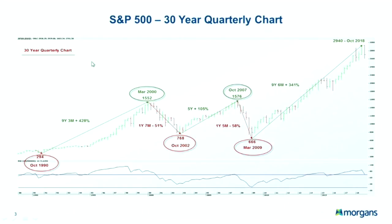Let's add some indicators to see why the red lights are flashing and why investors are nervous. Here I'm showing a 30-year quarterly chart on the S&P 500. What we can observe is that for the past three decades we had three bull markets, which ran for nine years, three months; five years; and currently the longest bull market at nine years and six months.